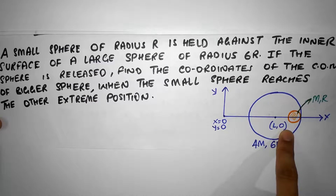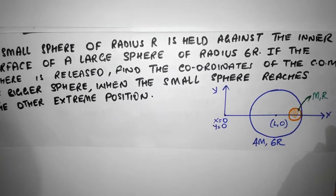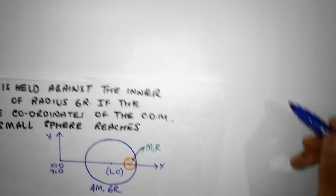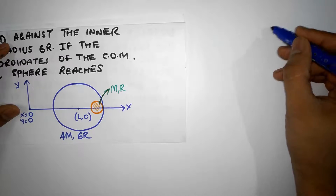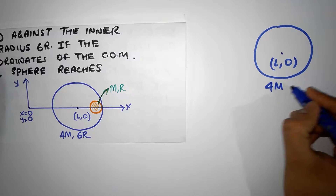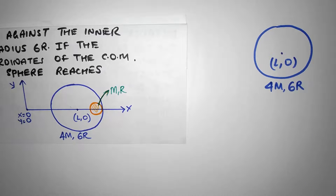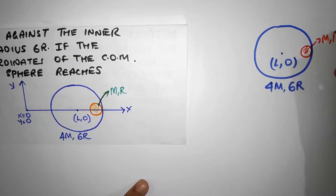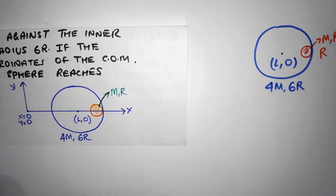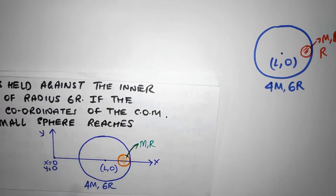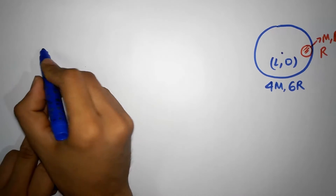I'm going to use a brute force technique to solve this — I'm not going to think much, I'm just going to plug in numbers. So let me do a quick drawing. This is (L, 0), and we have the big sphere of mass 4m and radius 6r, with the tiny sphere of mass m inside it.